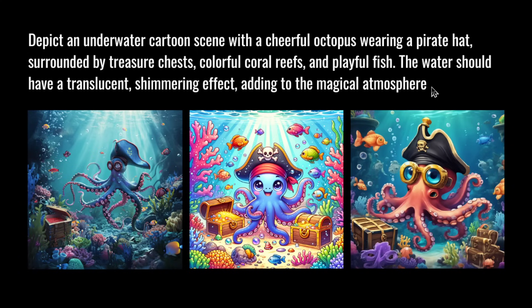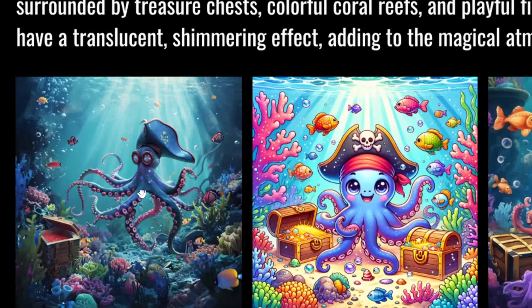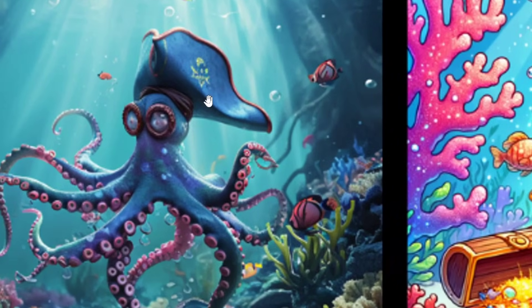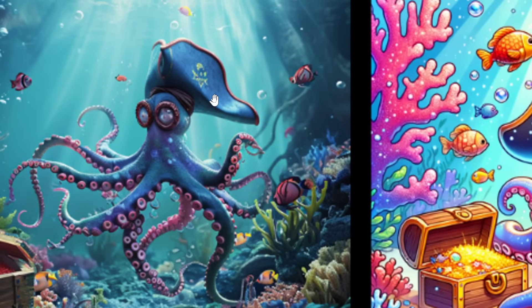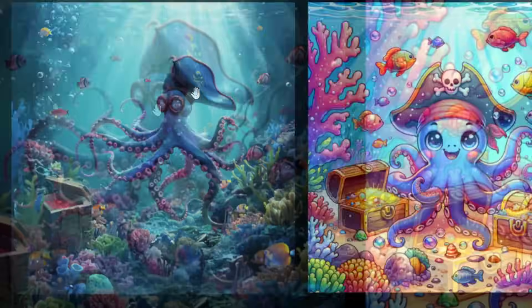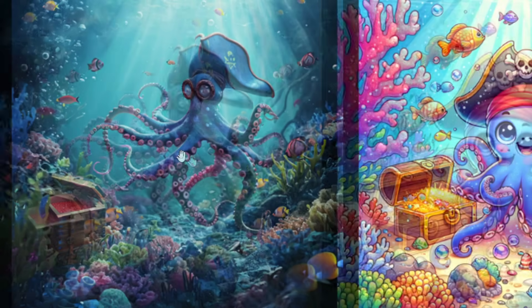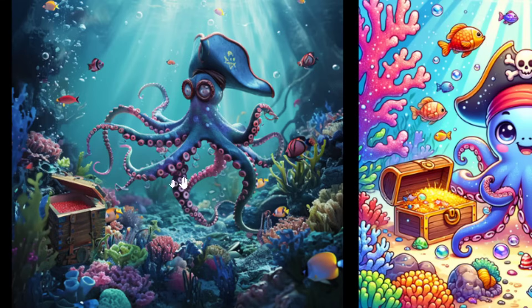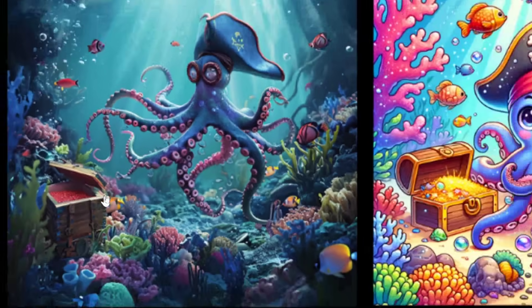First, the cartoon image prompt: 'Depict an underwater cartoon scene with a cheerful octopus wearing a pirate hat, surrounded by treasure chests, colorful coral reefs, and playful fish. The water should have a translucent shimmering effect adding to the magical atmosphere.' Here's the first image — definitely has an octopus with the look of a pirate's hat, though not the common skull logo. Big octopus eyes, kind of a muted style. I see a treasure chest here with what looks like pearls.